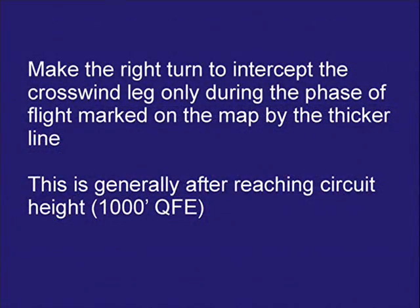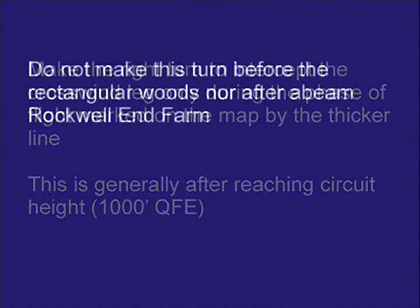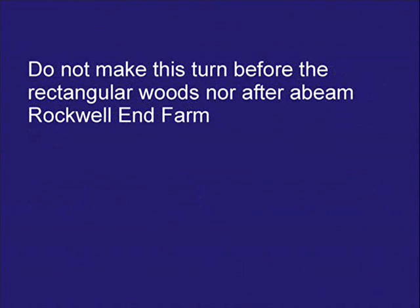Make the right turn to intercept the crosswind leg only during the phase of flight marked on the map by the thicker line. This is generally after reaching circuit height, 1,000 feet on QFE. Do not make this turn before the rectangular woods, nor after abeam Rockwell End farm.